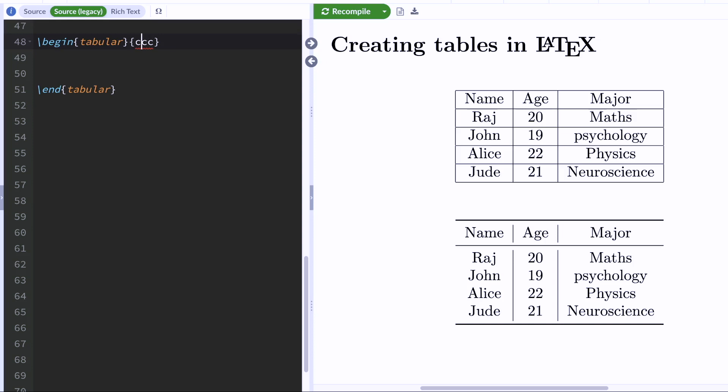Now, you have to use the pipe symbol to tell LaTeX that you want vertical lines separating each column. So this pipe symbol over here tells LaTeX to draw a vertical line between these two columns.